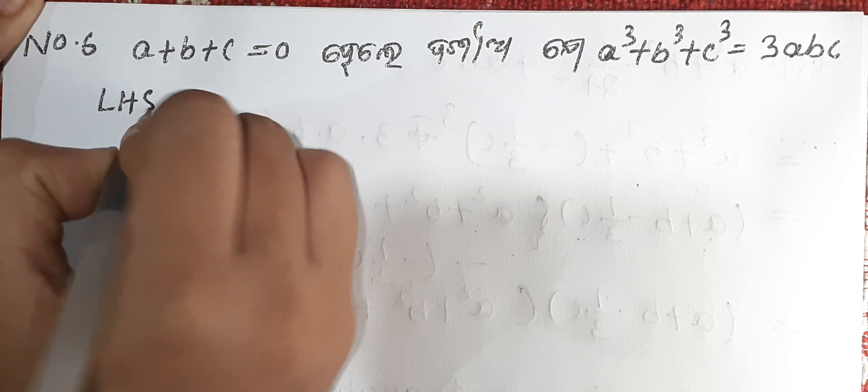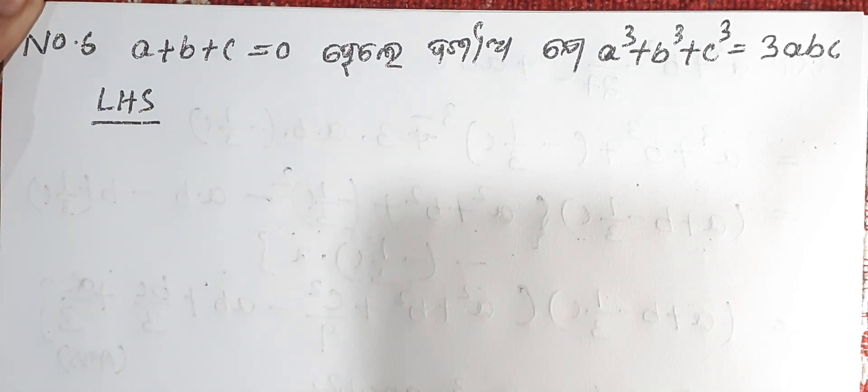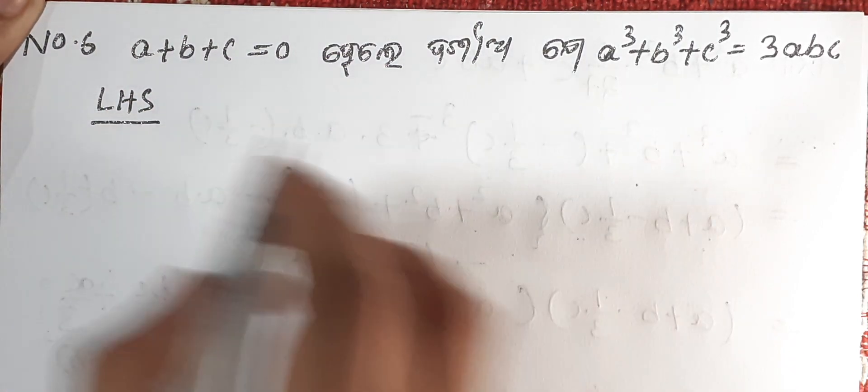Taking LHS, that is A cube plus B cube plus C cube.